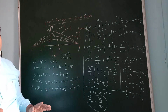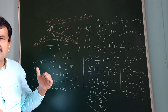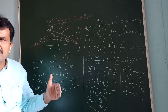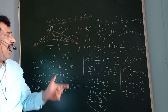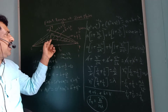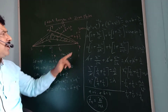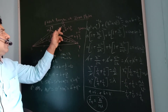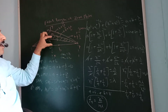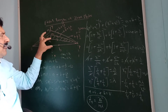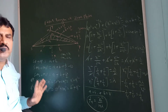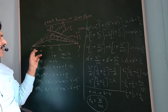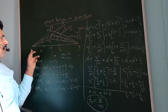We know that the phase difference between two successive zones is π, and the path difference between two successive zones is λ/2. Therefore: OP = B, PM1 = B + λ/2, PM2 = B + 2λ/2, PM3 = B + 3λ/2.